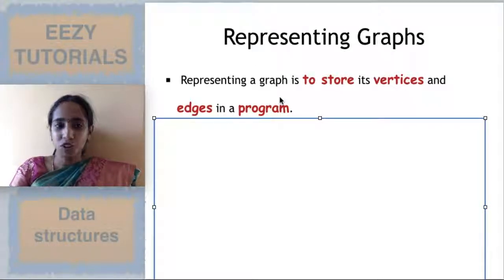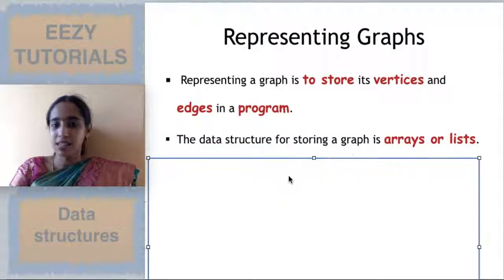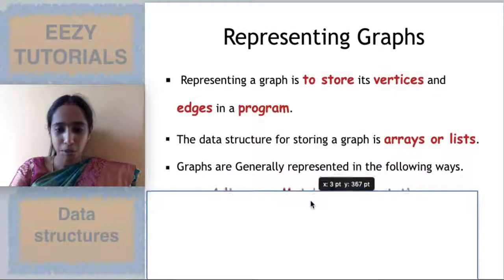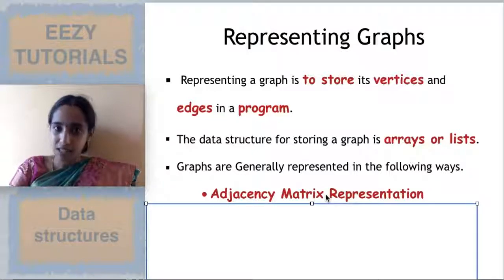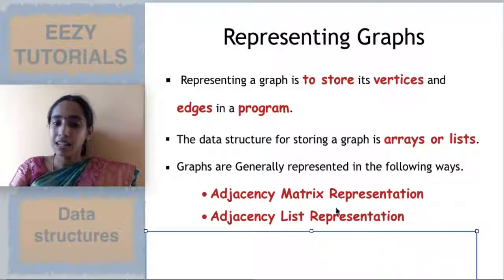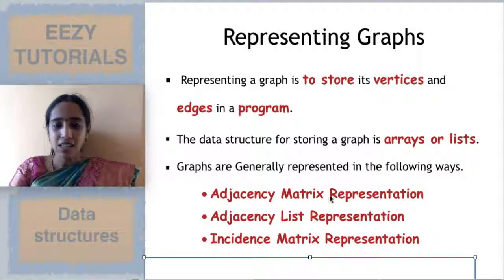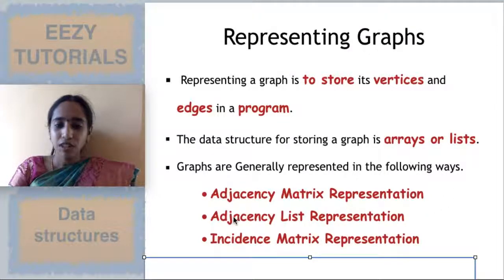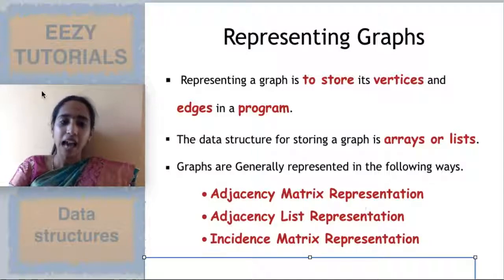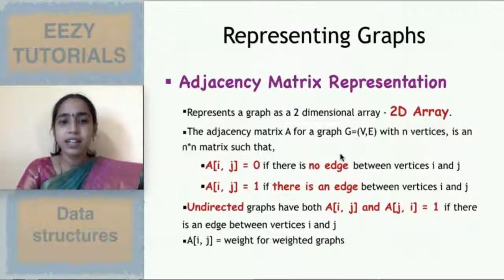So what data structure can you use for graph representation? You can use arrays and lists. What are the methods present for representing a graph? Three methods are present: adjacency matrix representation, adjacency list representation, and incidence matrix representation. For the matrix representations you use arrays, and for adjacency list representation you use both arrays and lists.